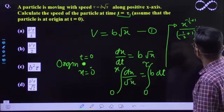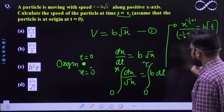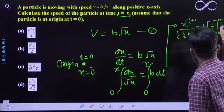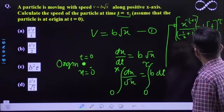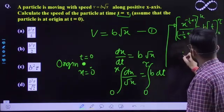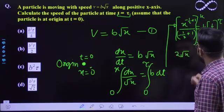So, dehko yeh expression hai gya. This is b and t, okay, t goes to zero to tau and yaha pe x goes from zero to x. So what you'll be getting? This is nothing but root x.